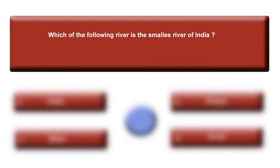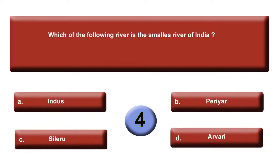Next question: Which of the following river is the smallest river of India? Your options are: option A, Indus; B, Periyar; C, Sileru; or option D, Arwari. Time is up. Your right answer is D, Arwari.